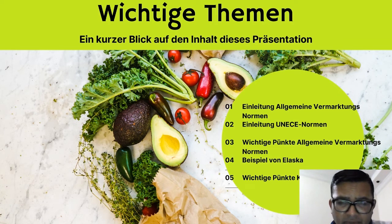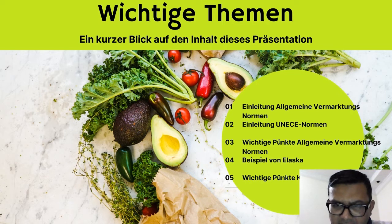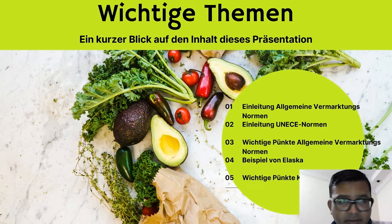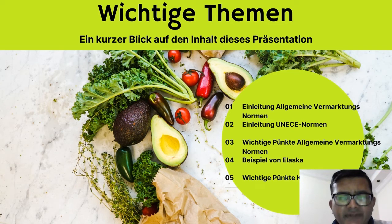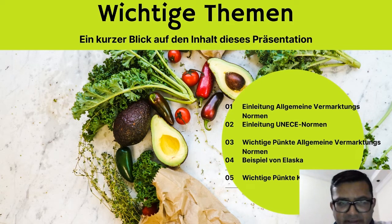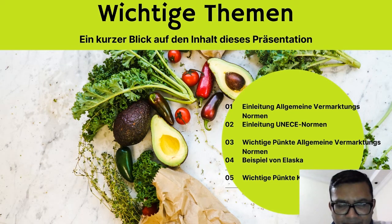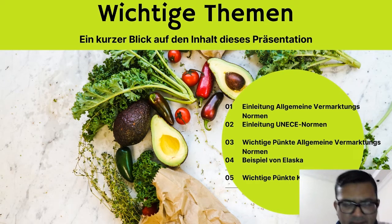Then there will be general points about overall marketing requirements, followed by an example from a software called Alaska — a software developed by the German Ministry of Food and Agriculture — which depicts different quality defects and sets criteria for the inspection of fruits and vegetables. At the end, I will summarize the whole presentation and discuss the most important points covered.